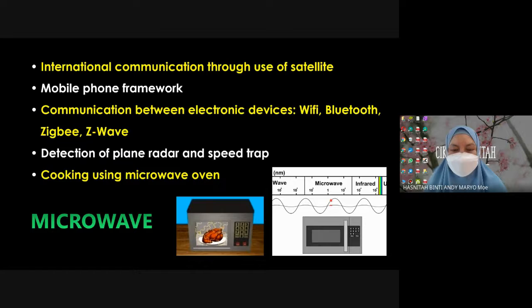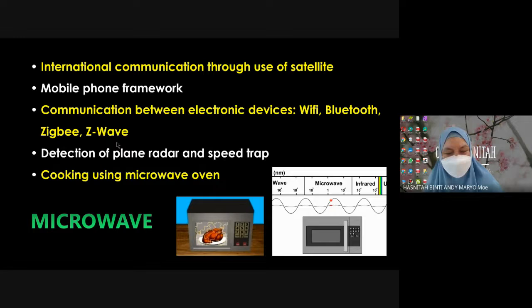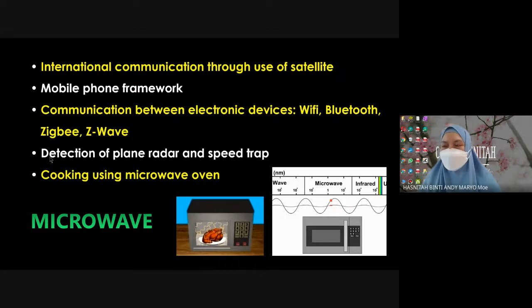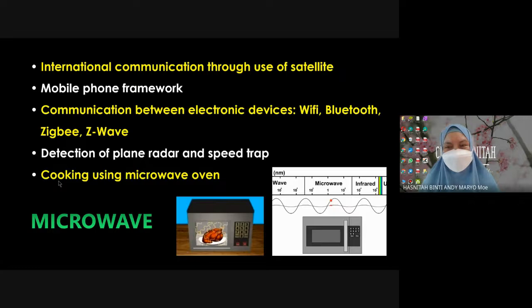Microwave is also used for cooking using a microwave oven. We have two types of oven - one uses microwave, and the ordinary oven uses electrical current which produces infrared. For the application of microwave: A - satellite transmission; B - radar detection; C - cooking. So those are the three main applications of microwave.